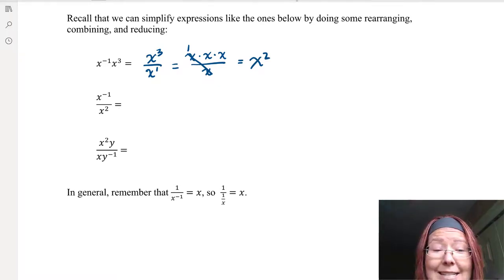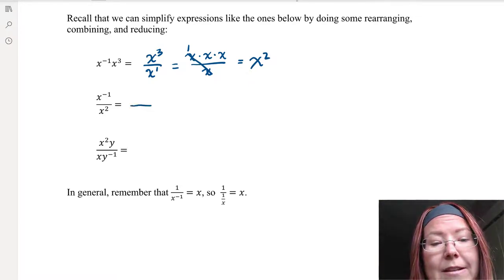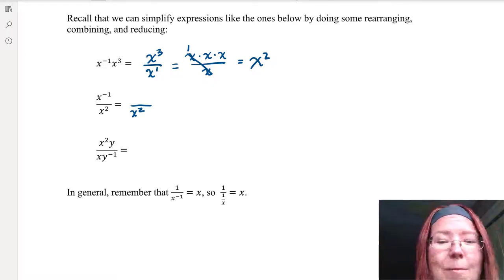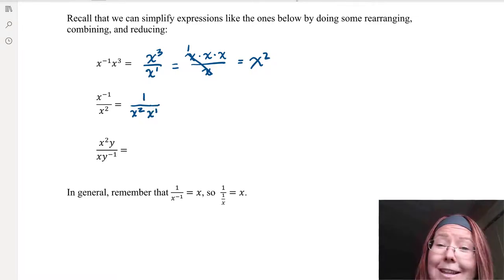The next one we'll look at is x to the negative first over x squared. We can rearrange so that x squared can stay put in the denominator, and x to the negative first can move down, becoming x to the positive first in the denominator. We'll put a one in the numerator to hold the space.